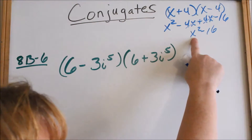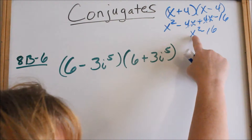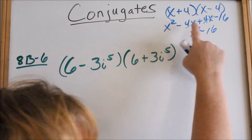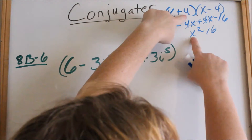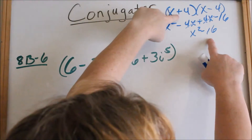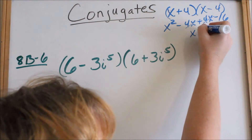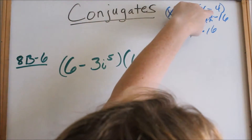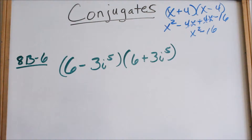So anytime you multiply conjugates, you are going to get the square of this term and this term. The square of x is x squared. The square of 4 is 16. And then the middle sign will always be a subtraction sign when you multiply conjugates together, because you have a positive times a negative. This is what happens when you multiply conjugates together.